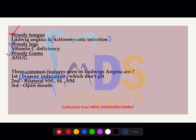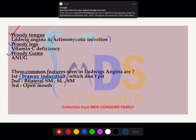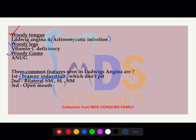On the topic of bilateral swellings: bilateral bony swelling is seen in cherubism, which is also bilateral. Bilateral salivary gland swelling is seen in mumps. Bilateral bony swelling is seen in cherubism. And Ludwig's angina involves three types of lymph nodes on both sides — submandibular lymph nodes, submental lymph nodes, and sublingual lymph nodes — all contributing to the swelling.